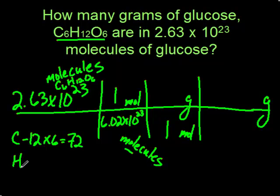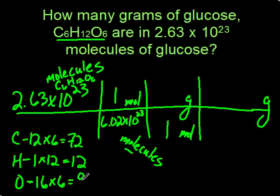H is going to be 1, and there are 12 of those, so that's going to be 12. And O is 16, and there are 6 of those, so that's going to be 96.